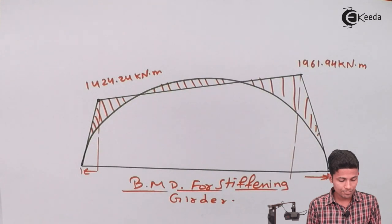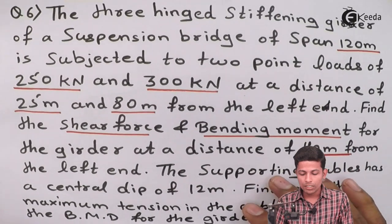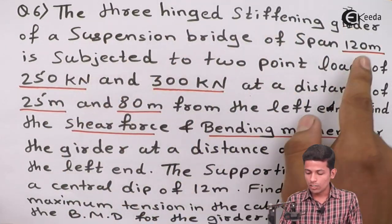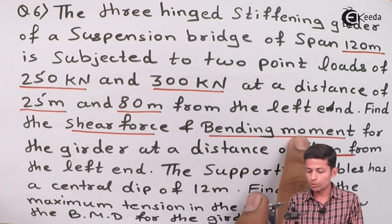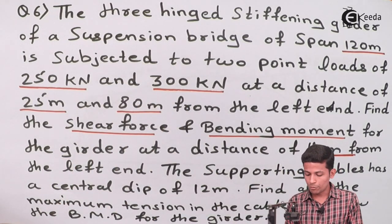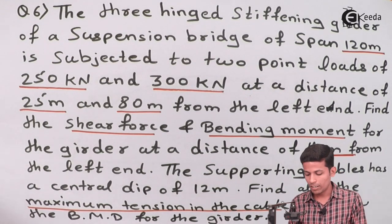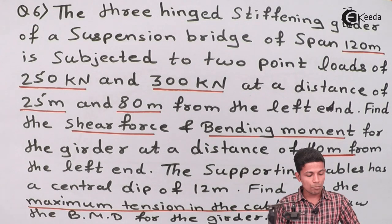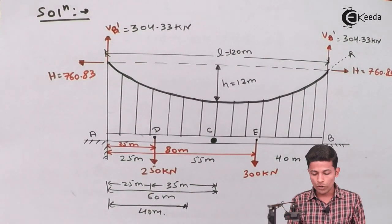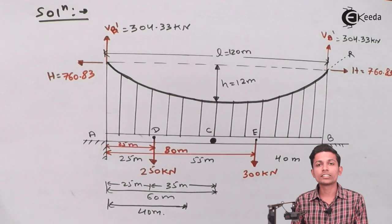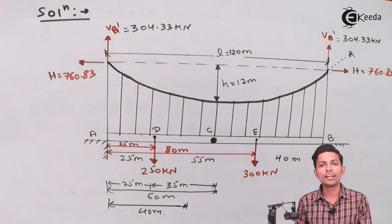Now let's review the problem: the three-hinged stiffening girder of 120 m span — we have found the shear force and bending moment at 40 m, and the maximum tension in the cable. I hope you understand this video. Share it with your friends and don't forget to subscribe to the IGEDA channel. Thank you.